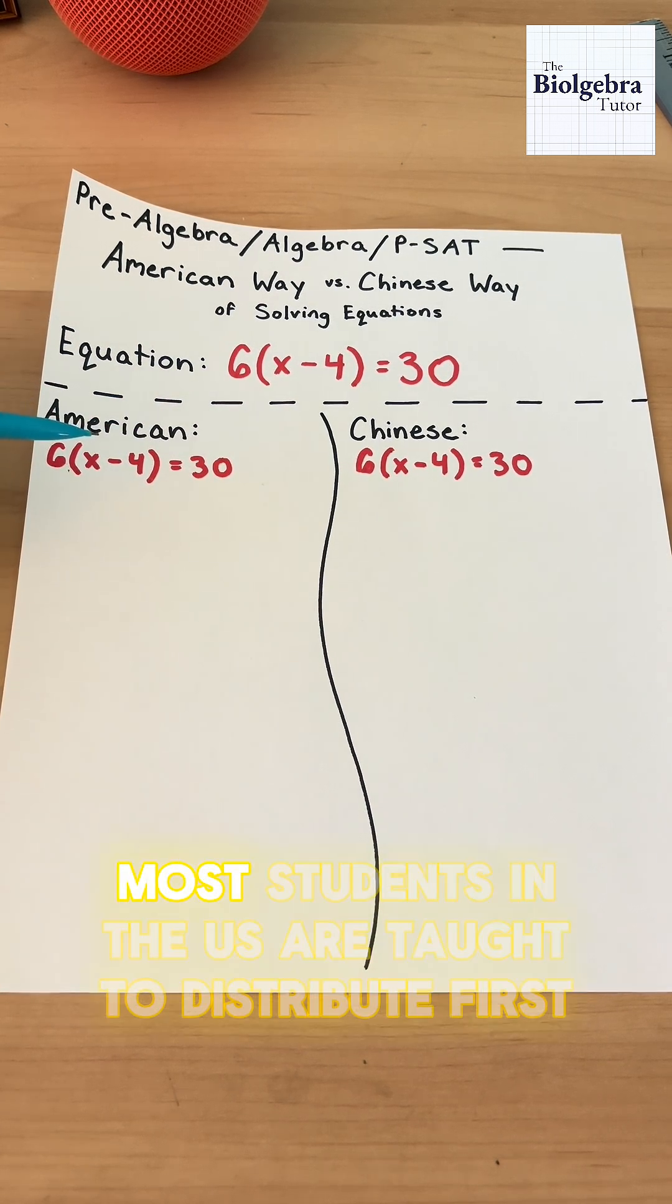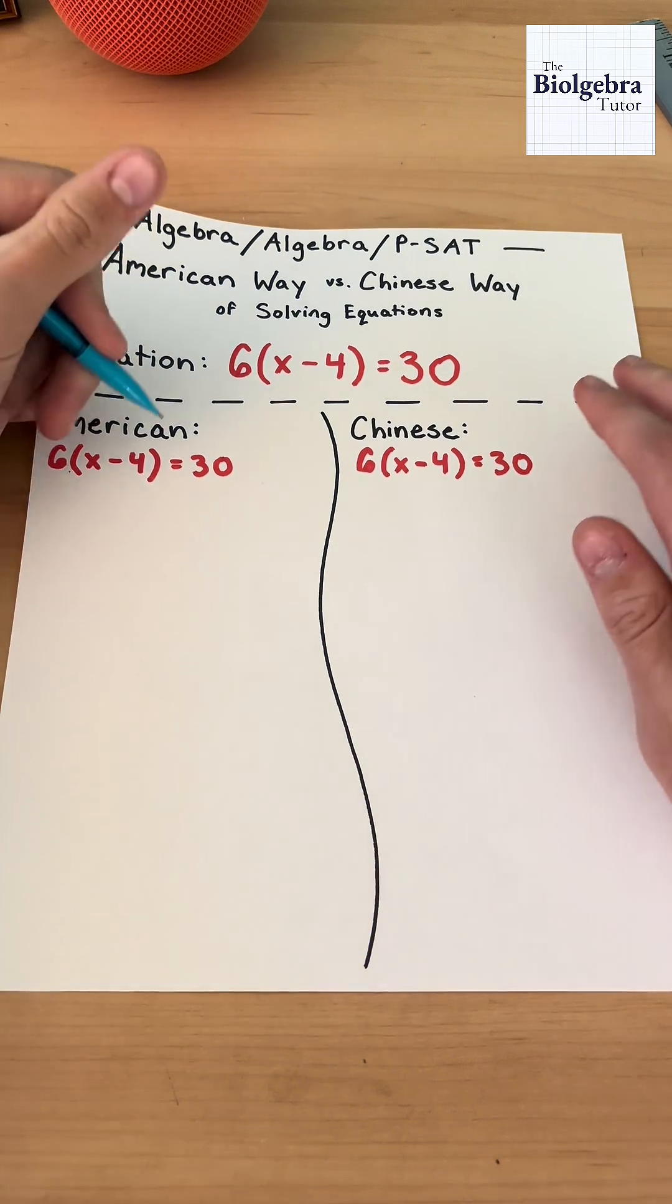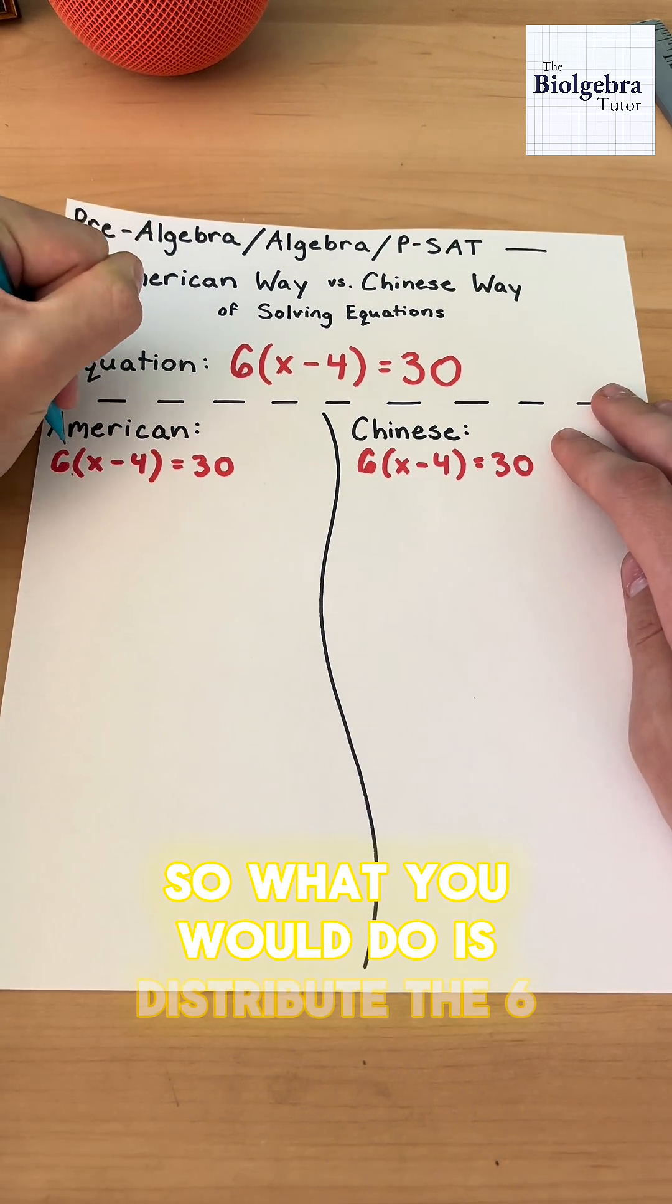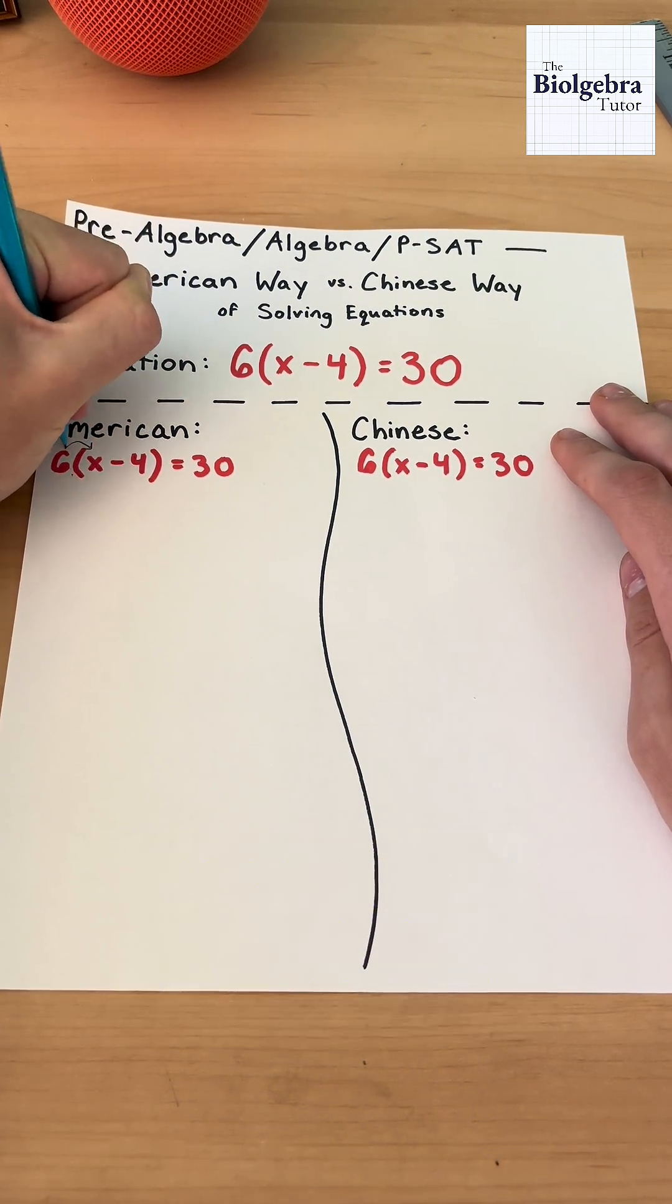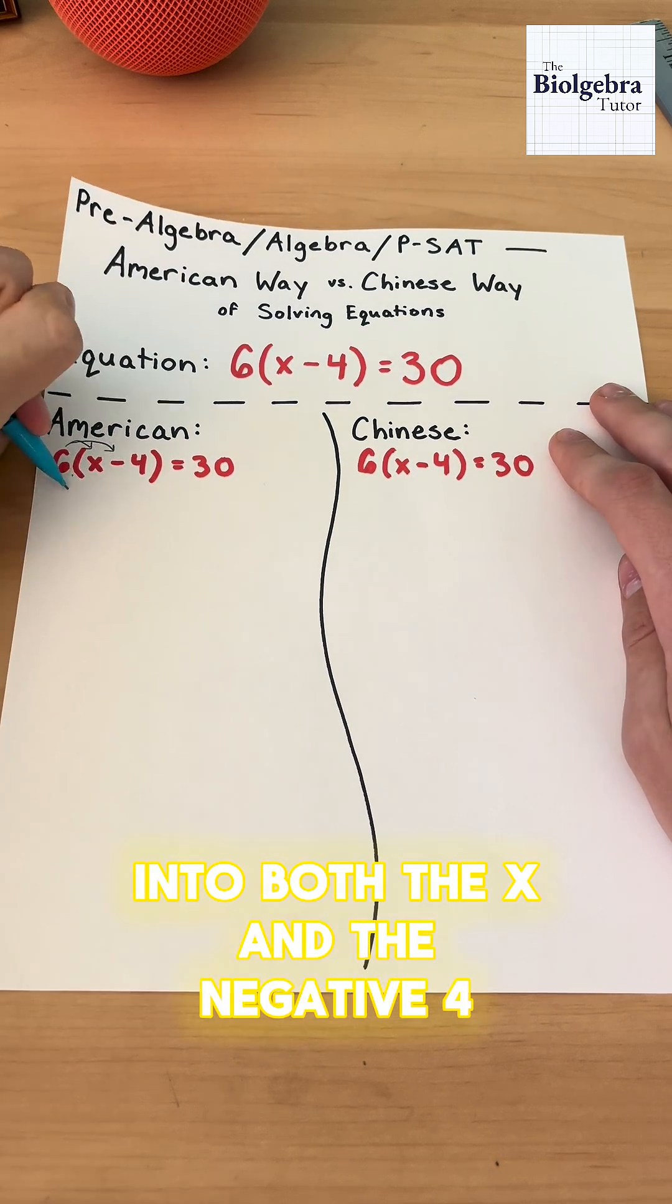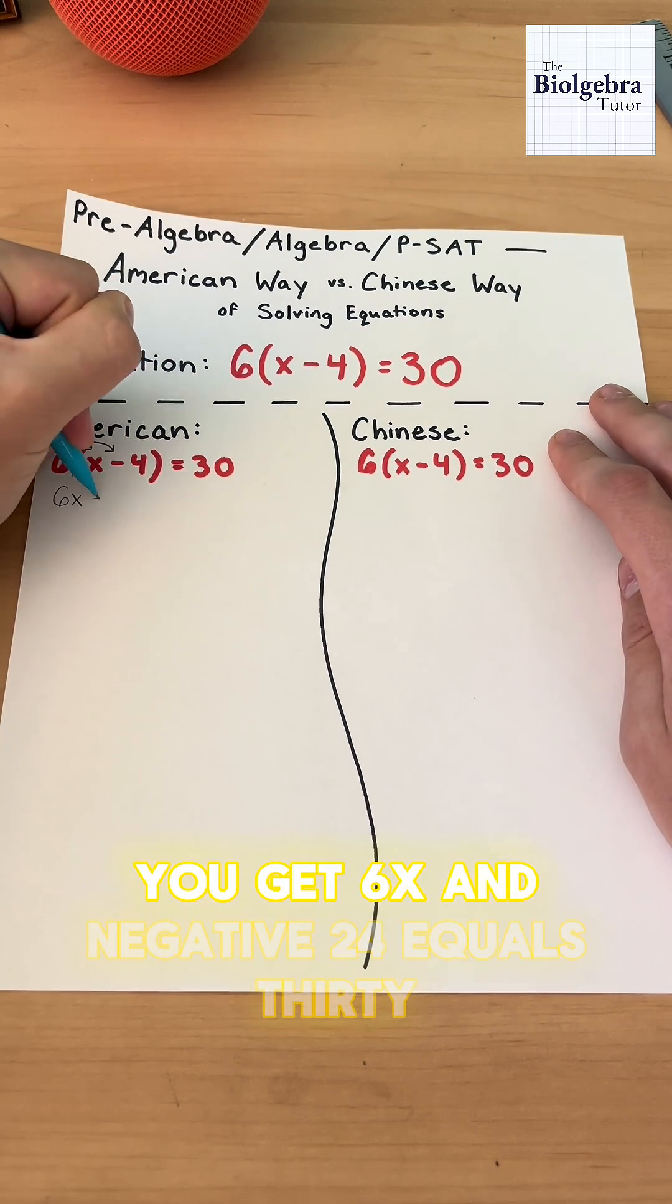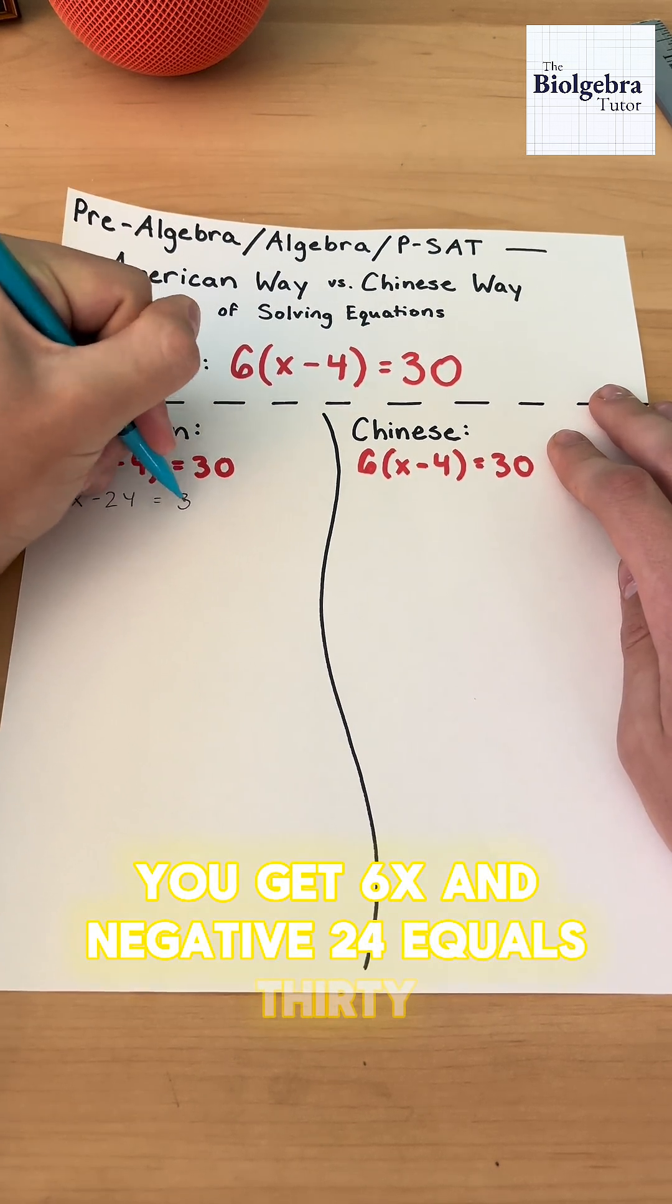In America, most students in the U.S. are taught to distribute first. So what you would do is distribute the 6 into both the x and the negative 4. We get 6x and negative 24 equals 30.